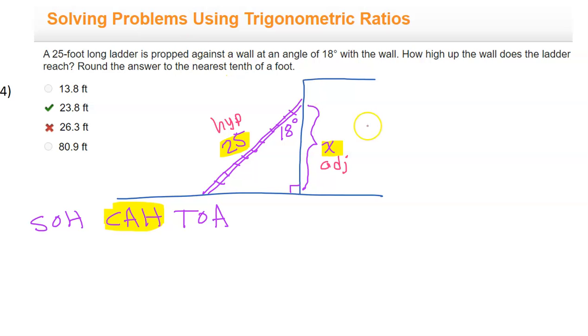Let's go ahead and set up cosine. We say cosine, next comes the angle: cosine of 18 degrees. And cosine is adjacent over hypotenuse, so that will be X over 25.